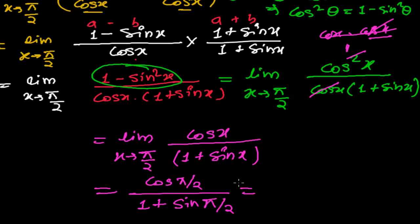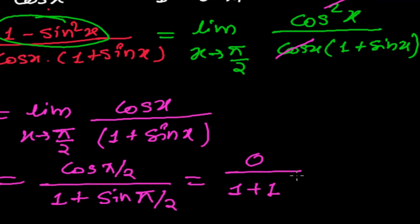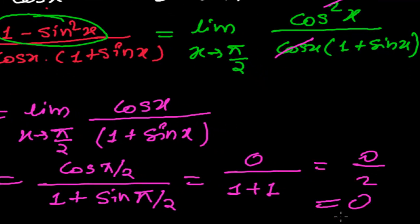Cos π/2 whole divided by 1 plus sin π/2. And the cos π/2 is 0, and then 1 plus 1, that is 0 upon 2, that is 0 itself.